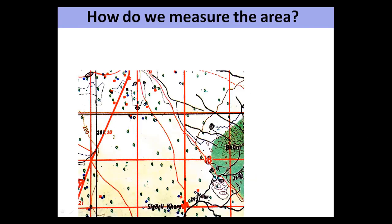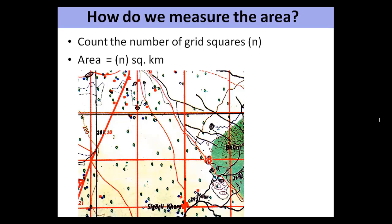Now we will learn how to measure the area on a topographical map using a grid technique. Count the number of grid squares — if there are N grids, the area equals N square kilometers. For example, if 1, 2, 3 grids fall between the eastings and northings, those 3 grids equal 3 square kilometers. In this manner, one can calculate area by counting the number of grids.